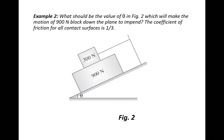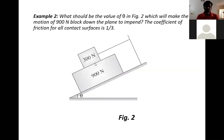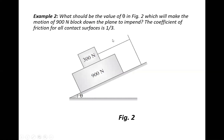The 300 Newton block is connected to a wall. We need to find what value of theta will make the motion of the 900 Newton block down the plane impend. The coefficient of friction for all contact surfaces is 1 by 3, that is 0.333.